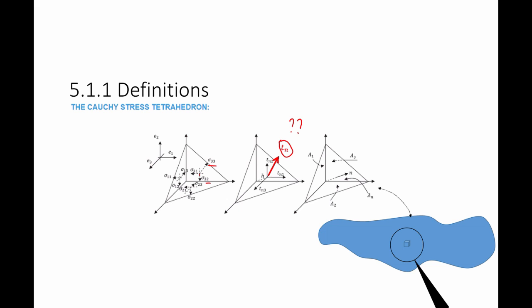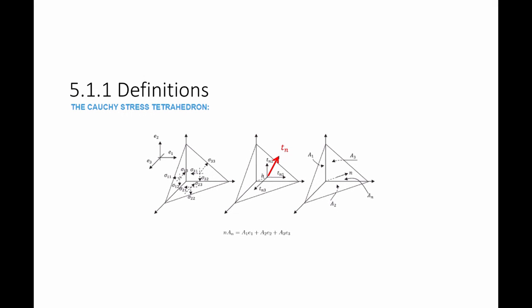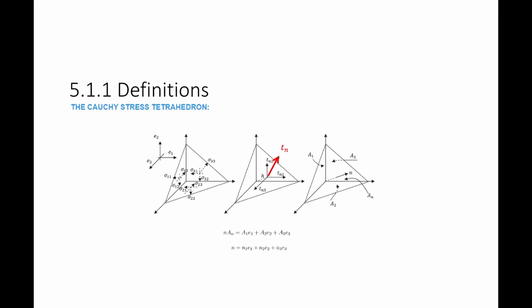Knowing the stress components — the traction vectors acting on the surfaces perpendicular to E1, E2, and E3 — I can use linear algebra to show that the vector n multiplied by An equals the area A1 multiplied by E1, plus A2 multiplied by E2, plus A3 multiplied by E3, where A1, A2, and A3 are the areas of the surfaces at the back of the tetrahedron. Dividing by An, n equals n1·E1 + n2·E2 + n3·E3, where each ni equals the corresponding area divided by An.